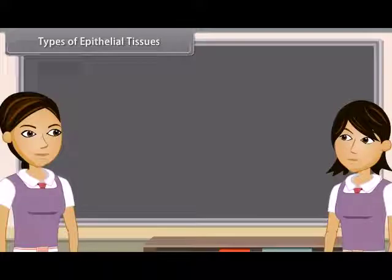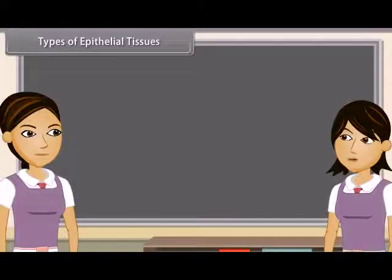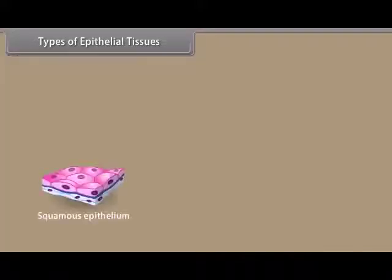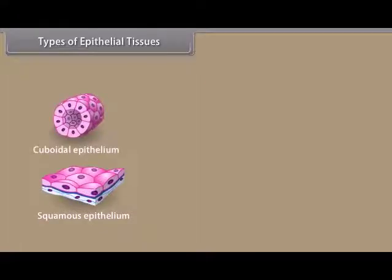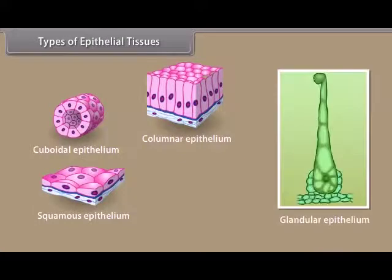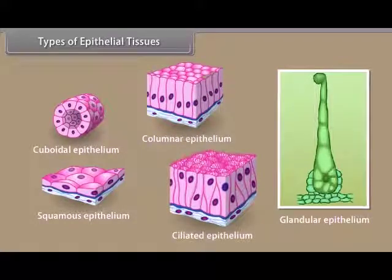Types of epithelial tissues: Epithelial tissues are classified into five types on the basis of functions and shape of the cells — Squamous Epithelium, Cuboidal Epithelium, Columnar Epithelium, Glandular Epithelium, and Ciliated Epithelium.